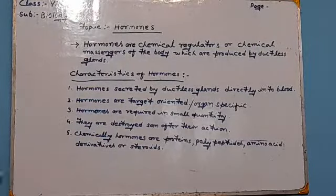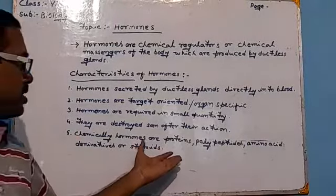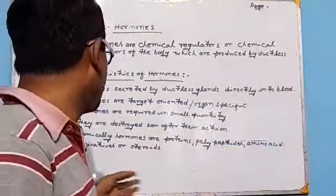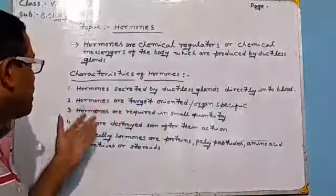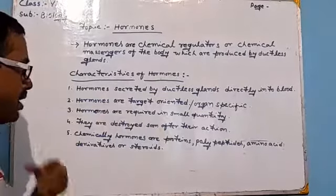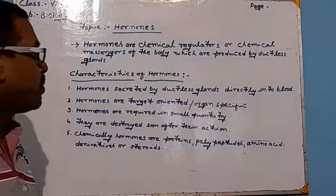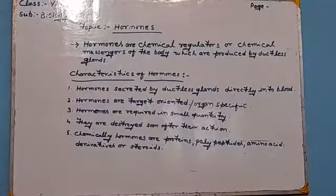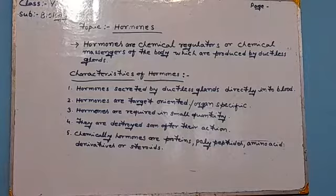The fifth and last characteristic feature is that chemically, hormones are either proteins, polypeptides, amino acids, amino acid derivatives, or steroids. These are the five characteristic features of hormones: they are secreted by ductless glands and discharged into the blood; they are target-oriented or organ-specific; they are required in very small quantities; they are destroyed soon after their action; and chemically they are proteins, polypeptides, amino acid derivatives, or steroids.